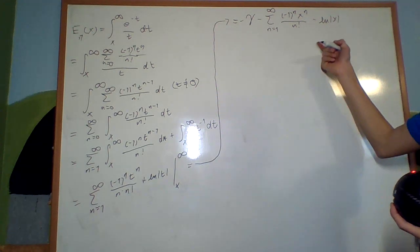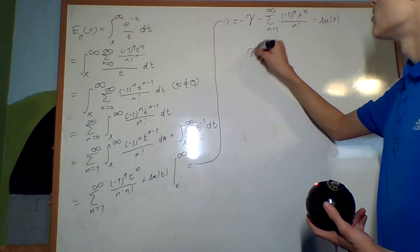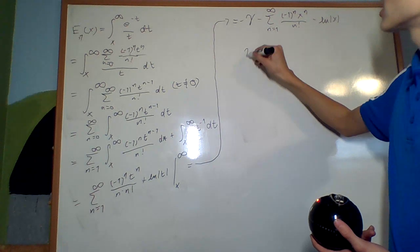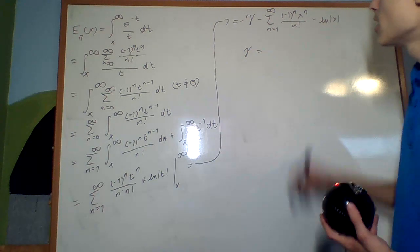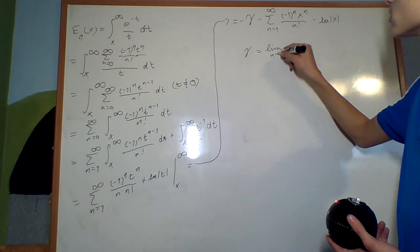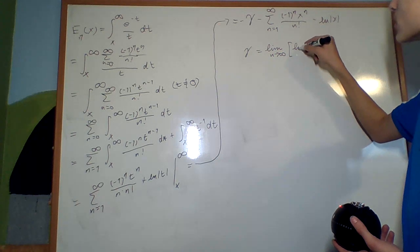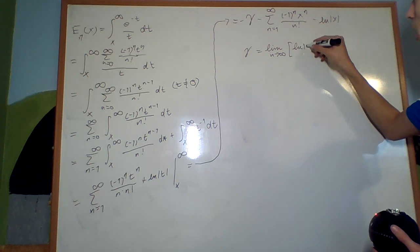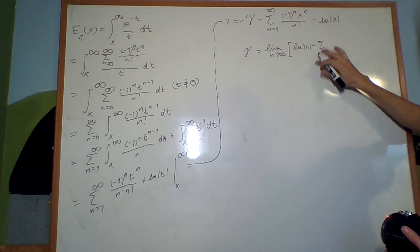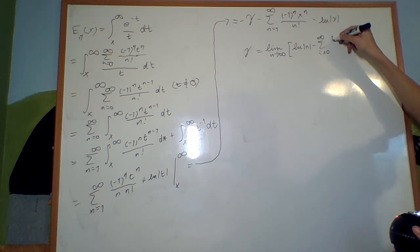What's gamma? Gamma is the Euler-Mascheroni constant. It's defined as the limit as n goes to infinity of the difference between the natural log of n and the sum of the reciprocals — that is, the harmonic series terms.